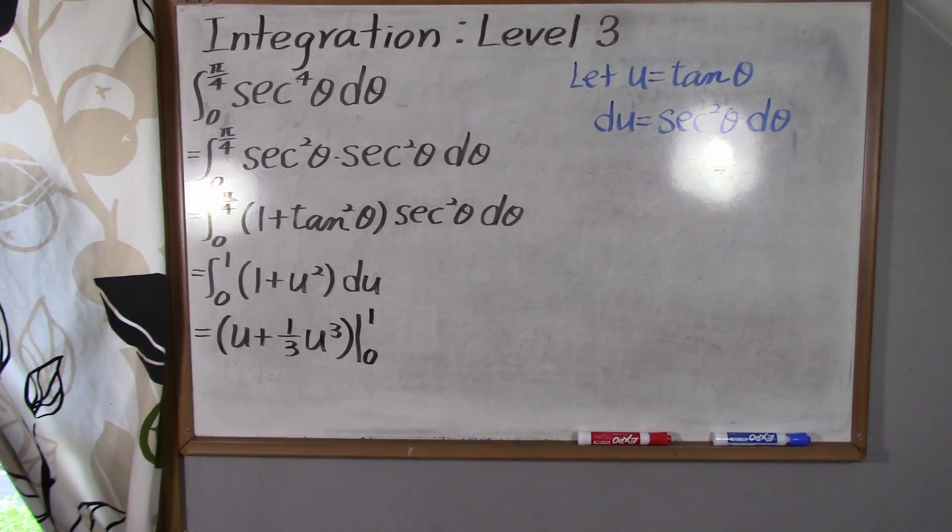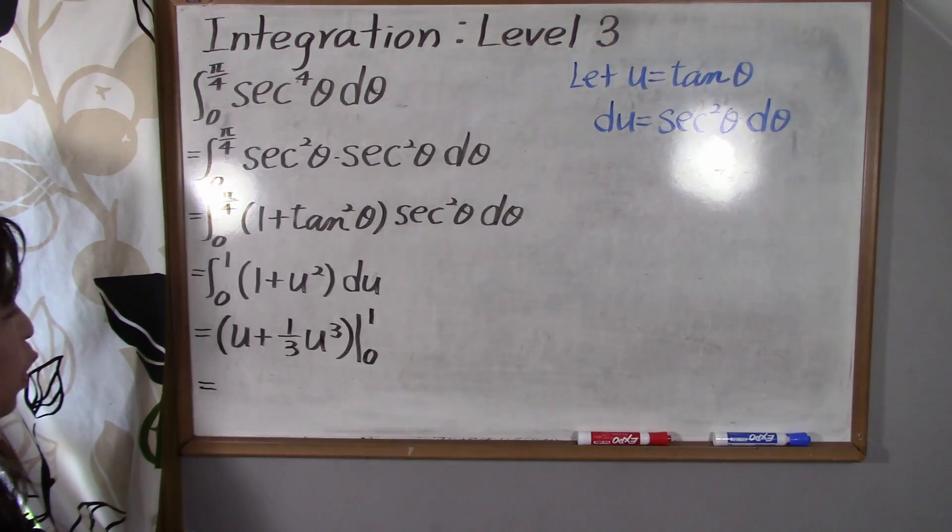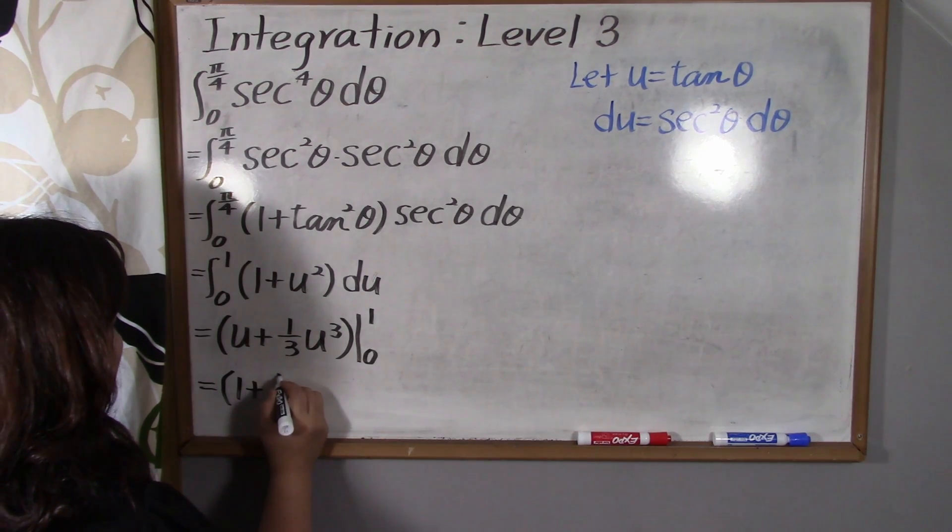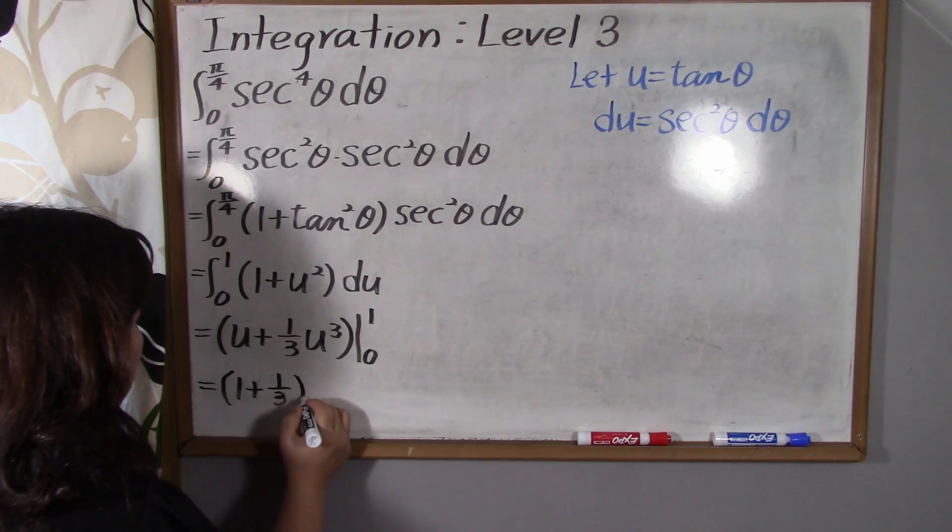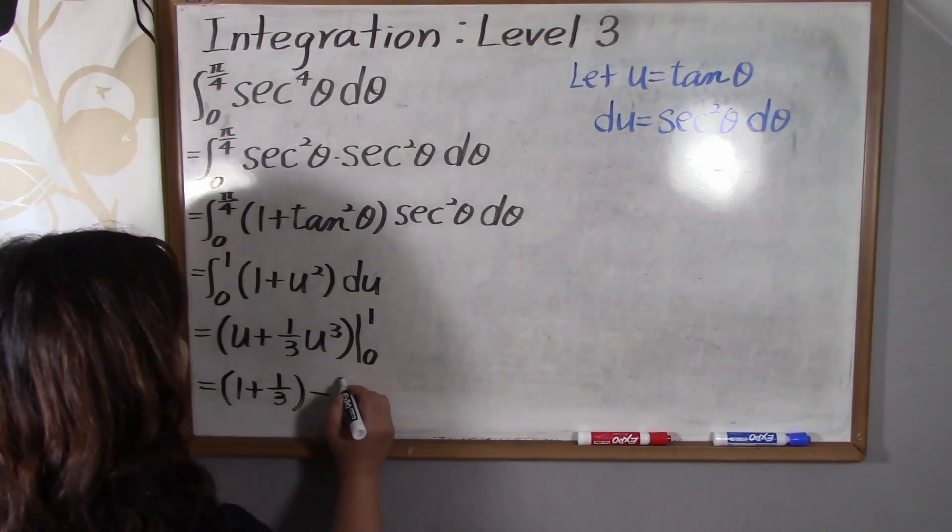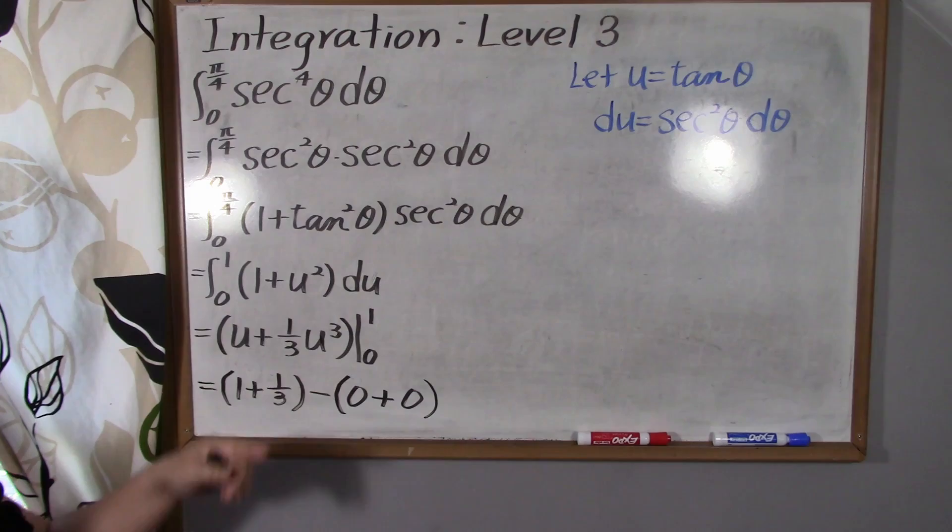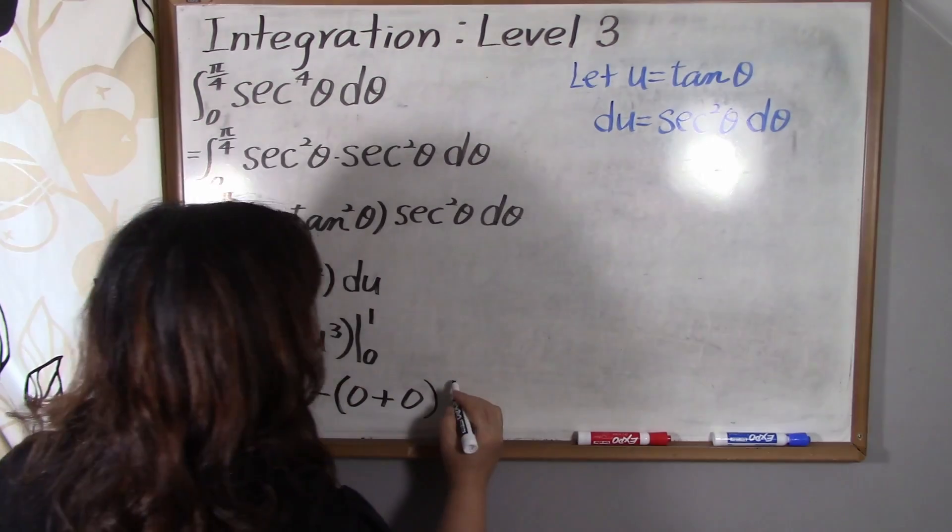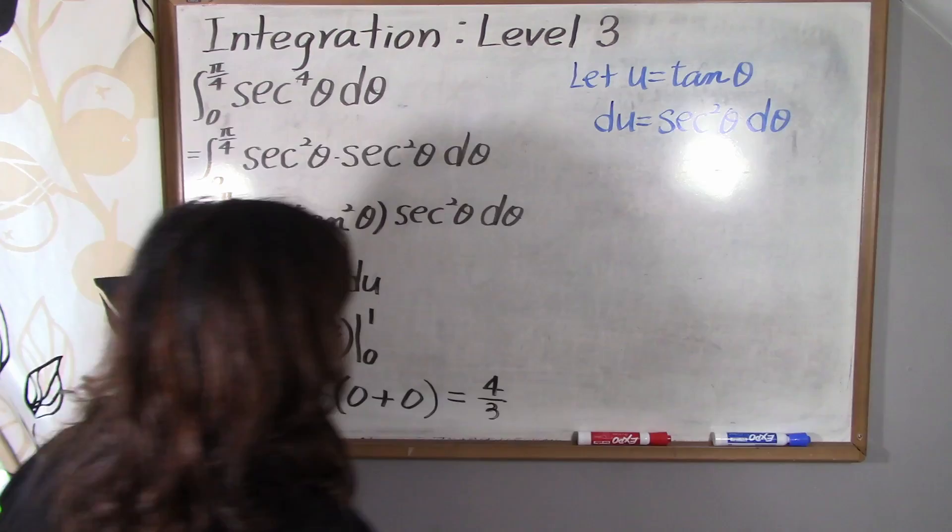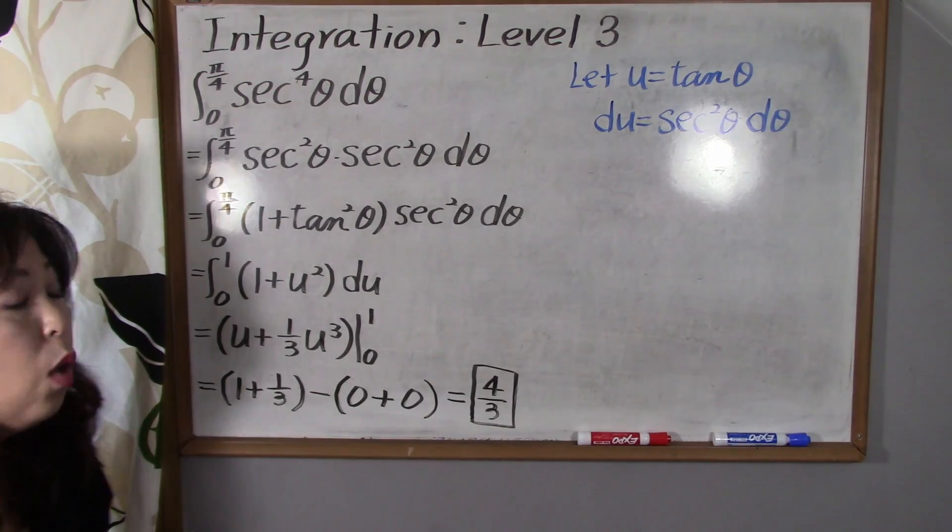So now we're gonna plug 1 and 0 into u. First of all, we're gonna plug 1 into u, so that is 1 plus 1 over 3. 1 cubed is 1, right? So subtract the value of this expression when u is equal to 0. It's going to be 0 plus 0. So 1 plus 1 over 3, final answer will be 4 over 3. This is the answer, 4 over 3.